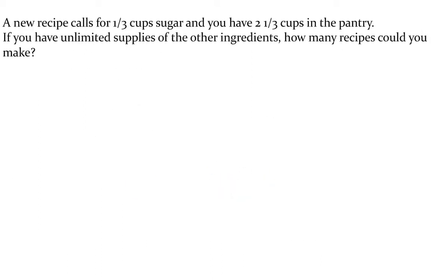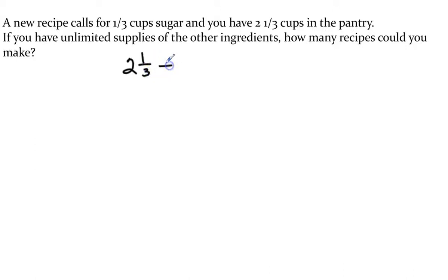In this problem, it says a new recipe calls for a third cup of sugar, and you have two and one third cups in the pantry. If you have unlimited supplies of every other ingredient, how many recipes could you bake? This is what the recipe calls for — a third of a cup. So we want to know how many third cups can fit into two and one third. Our number sentence is two and one third divided by one third equals what number, which would indicate how many recipes.